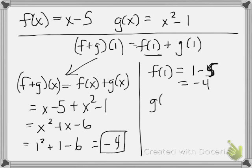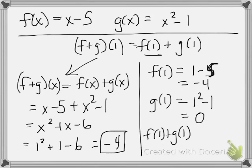I plug 1 into g, and I get 1 squared minus 1, which is 0. And then to add f of 1 and g of 1, I simply add negative 4 and 0, and get negative 4.